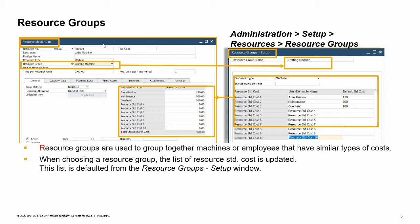The list of default standard costs in the resource master data is taken from the resource group definition, but can be changed manually for each resource. In our business example, OC Woodtrend has five lathe machines grouped together in the crafting machine resource group due to similar cost types. It is possible to define a different GL account for each resource standard cost, which will be used in the production journal entry. For more information about production cost, GL account determination, and production standard cost, see the next course topics.